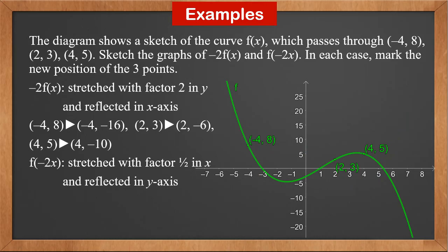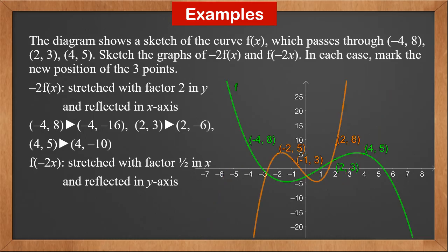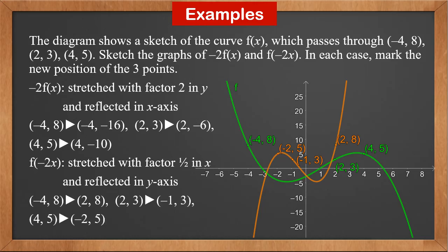In f(−2x), the minus sign reflects the graph in the y-axis and the 2 stretches it with factor ½ in the x-direction. For the same y value, the x value is divided by −2, so (−4, 8) → (2, 8), (2, 3) → (−1, 3), and (4, 5) → (−2, 5).